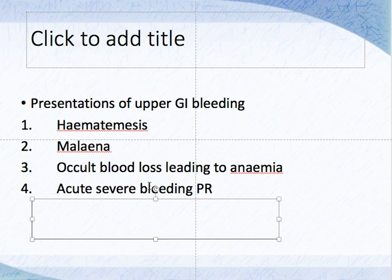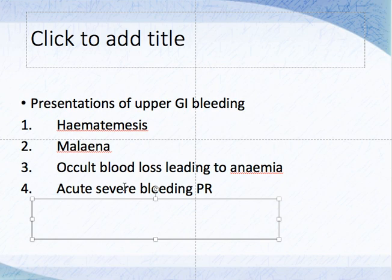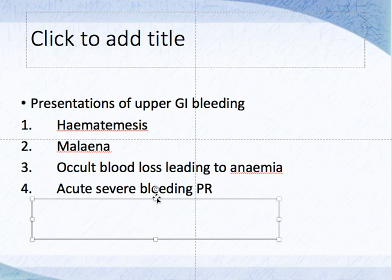A small proportion can in fact present as bleeding per rectum, but it is an acute severe bleeding PR. When we say bleeding per rectum, it usually means the person goes to the toilet and has bright red blood with stool. But acute severe bleeding PR means it is an acute onset and the person continues to bleed — it's not stool, just blood pouring out. If an upper GI bleeder is bleeding very profusely and fast, blood transits the gut so fast that before it changes color, they can present as bleeding PR, and it will be a severe one.